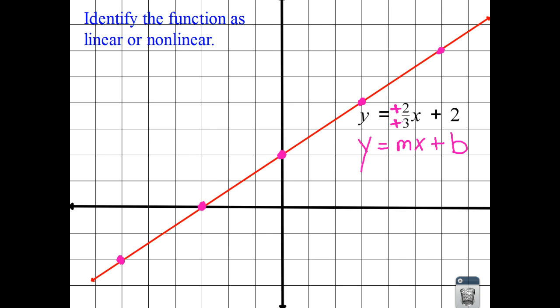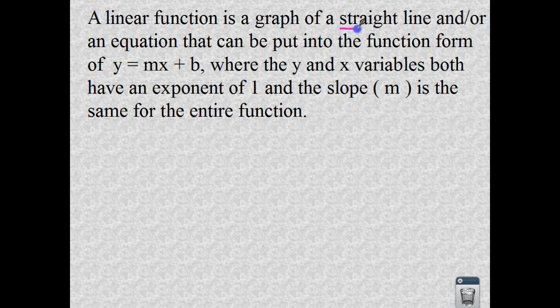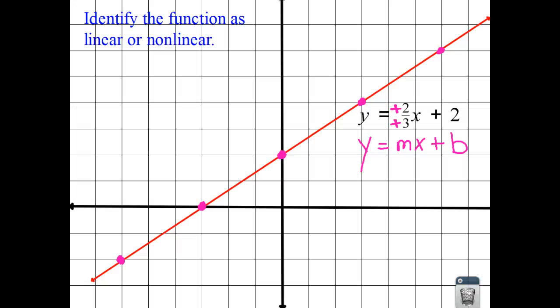The other part of the definition, if we were to go back, says it's a straight line. It can be put into the form, which it is. It's already in the form. And then the next part is, are y and x both having an exponent of one? The exponent of x is invisible. So if there's nothing there, we have a one. And there's nothing attached to the y for an exponent. So it's also invisible, which means it's a one. So all of the parts of the definition of a linear function do apply to this particular example. So this is why it is a straight line or it is linear.